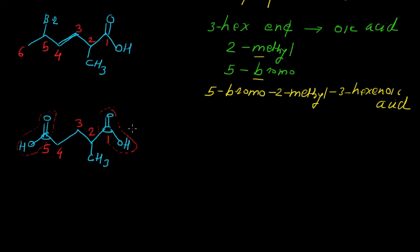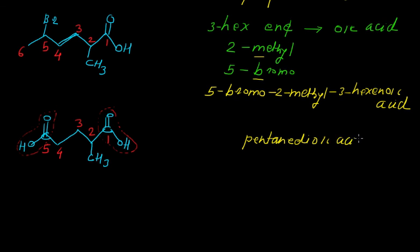When two carboxyl groups are present, the parent alkane name — pentane for 5 carbons — remains as is, and we add the prefix 'di' with the suffix 'oic acid', giving 'pentanedioic acid'. We also have a methyl group at position 2, so we write '2-methyl', making the full IUPAC name 2-methylpentanedioic acid.